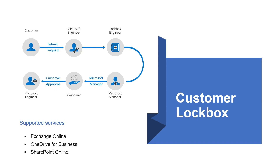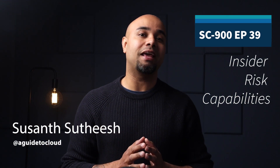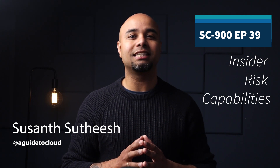Customer lockbox ensures that Microsoft can't access the content to perform service operations without explicit approval, and customer lockbox brings the organization into the approval workflow for requests to access their content. Because customer lockbox follows a formal approval for access control, a common question is how this capability relates to privileged access management. Customer lockbox allows a level of access control for organizations when Microsoft accesses their data, while privileged access management allows granular access control within an organization for all Microsoft 365 privileged tasks.